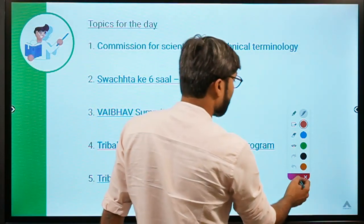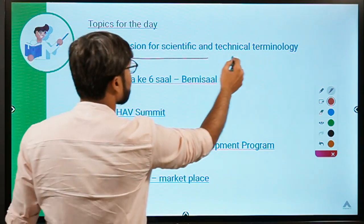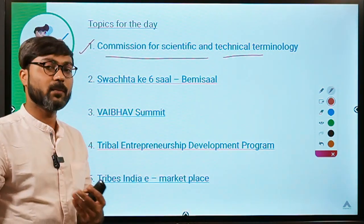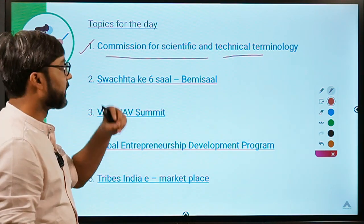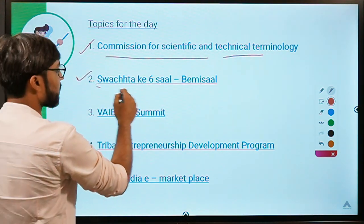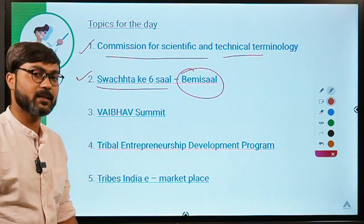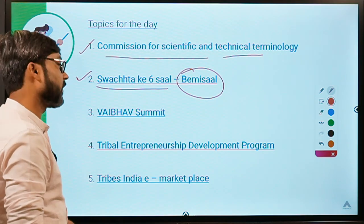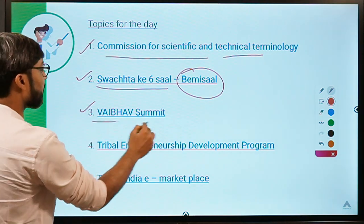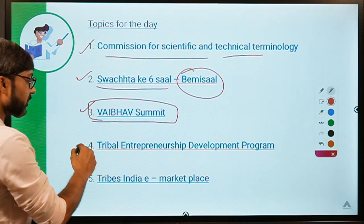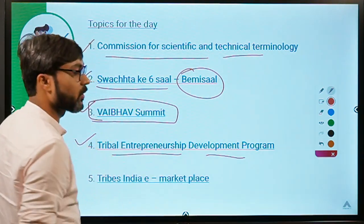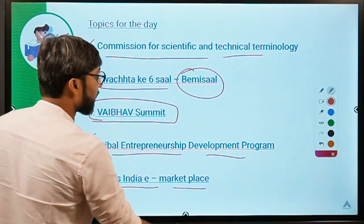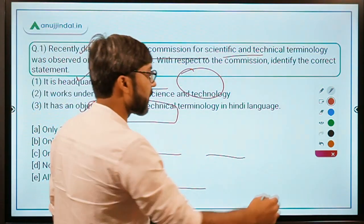These are the 5 topics we are going to discuss: first, Commission for Scientific and Technical Terminology — very few people have heard this commission's name, so we will discuss it. Second, Swachhita Ke 6 Saal Be Misal — Swachh Bharat Mission Urban completing 6 years with data from the Government of India. Third, a web summit launched by the Prime Minister. Fourth, Tribal Entrepreneurship Development Program by the Ministry of Tribal Affairs. And fifth, Tribes India E-Marketplace.